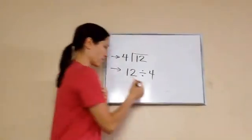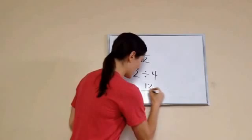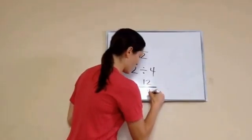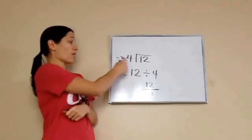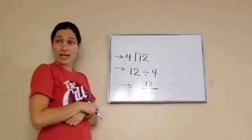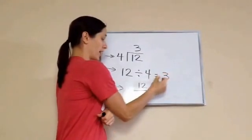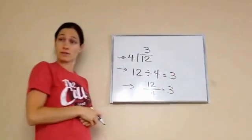There's one more way you'll see it. 12 divided by 4. See that? But all three of these equal the same number. 3, 3, 3.